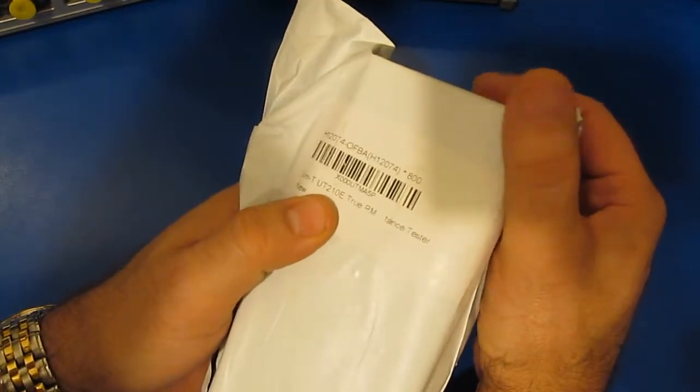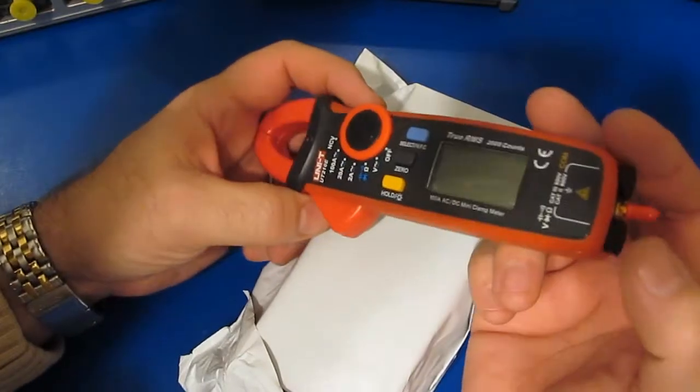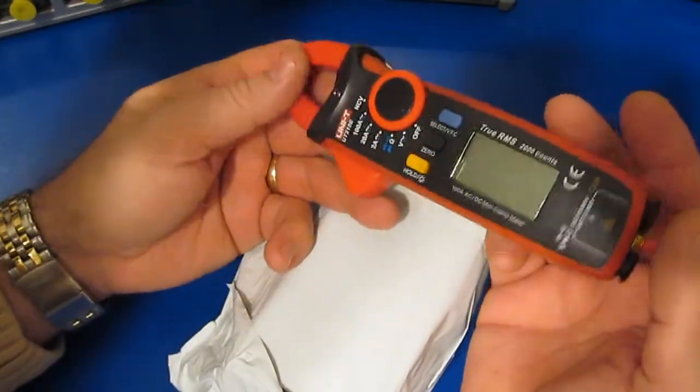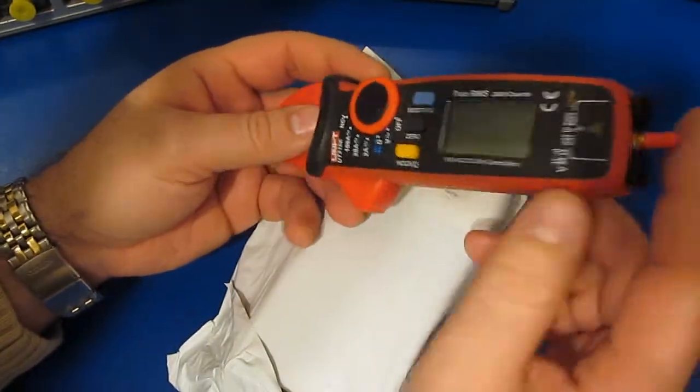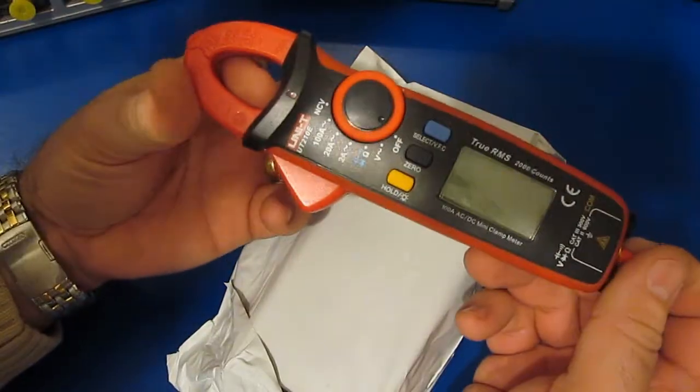Hello again. Today we're going to be looking at a Unity UT-210E. You may remember in the past I did a video where I modified this particular UT-210E to add this analog output that will drive an oscilloscope.